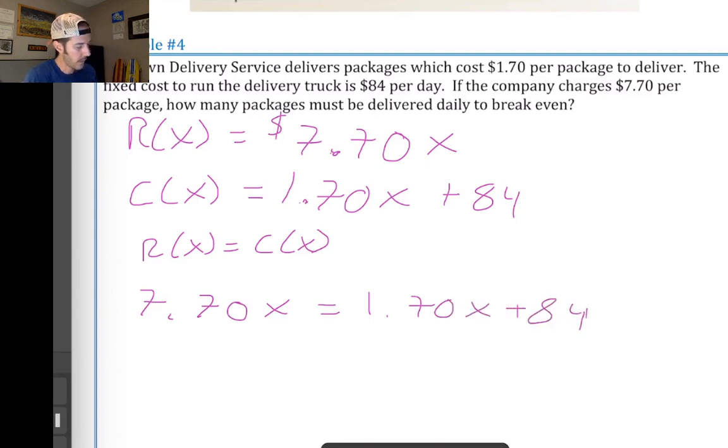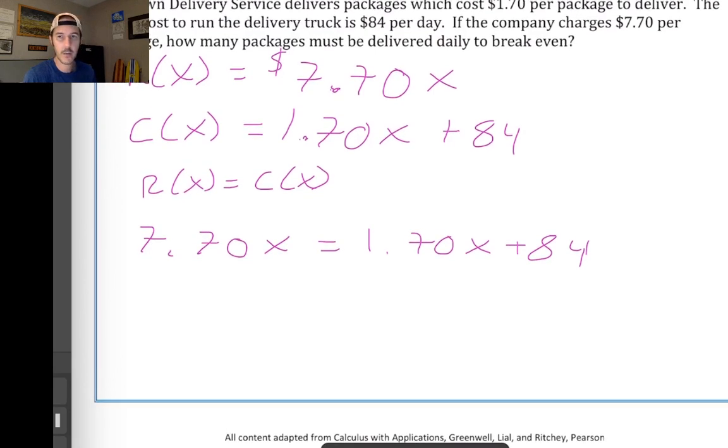And all we have to do now is solve for x. So we'll isolate our variable first. Let's get the variables over to one side of the equation. Let's move them to the left hand side. So we'll subtract 1.70x from both sides. That leaves us with 6.0x or just 6x on the left hand side. And that's equal to 84 on the right hand side. Divide both sides by 6 and you're left with an x value of 14. I've put a box around my final answer again.